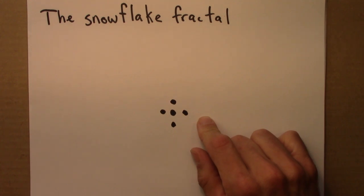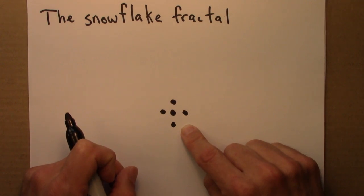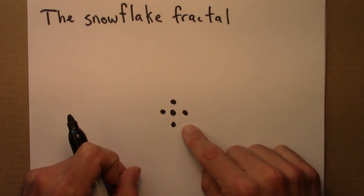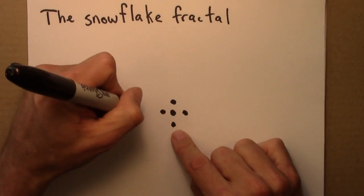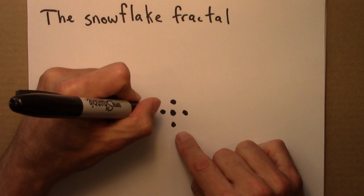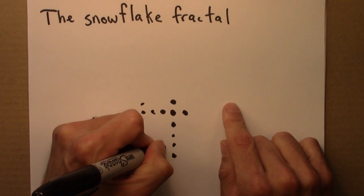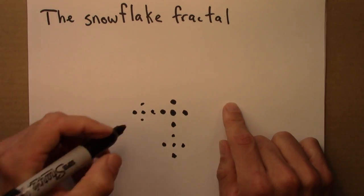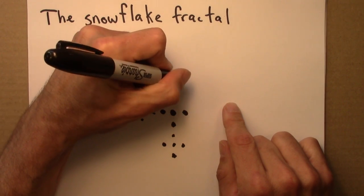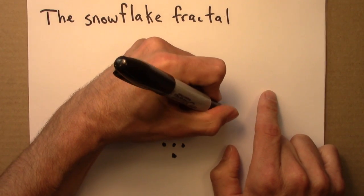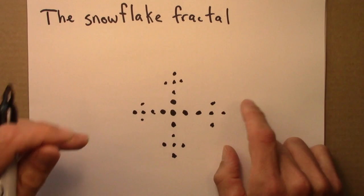Now I'm going to iterate that step. The next step, I'm going to take this shape, all five dots, make four copies and place them here: one, two, three, four. So here I'll do that. There's copy one, copy two, copy three, and copy four.